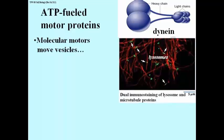Molecular motors typically move vesicles. Here we have the interior of a cell that has been dually immunostained, that is, there are two fluorescent antibody preparations.